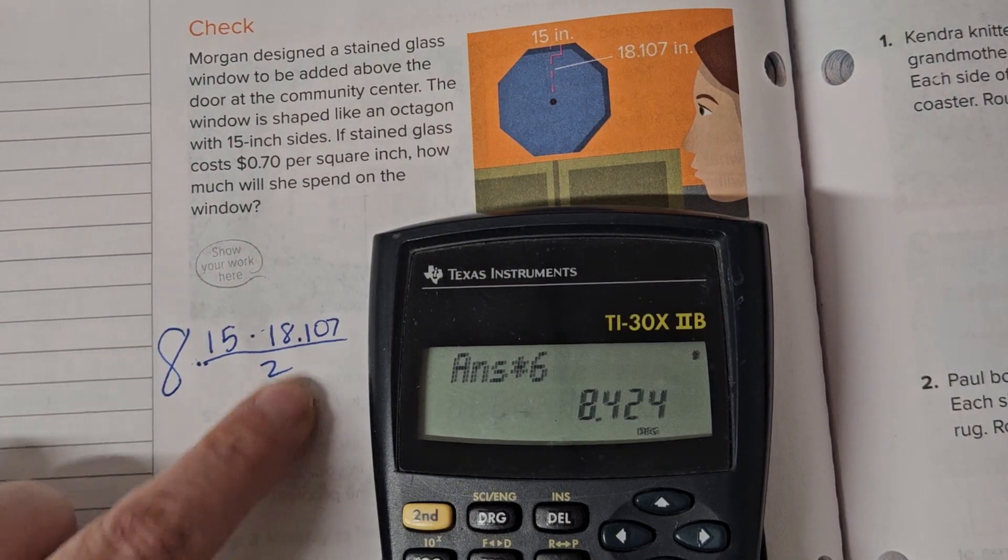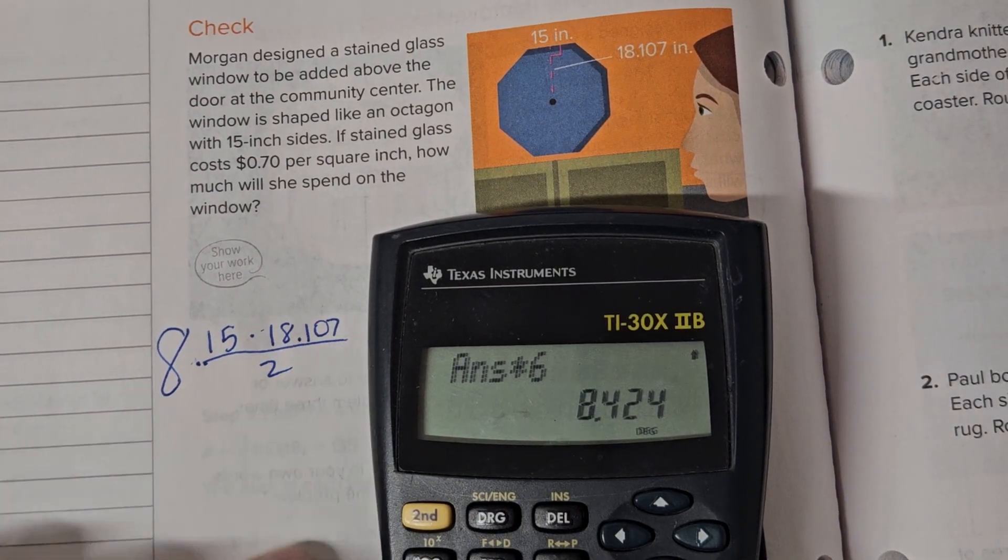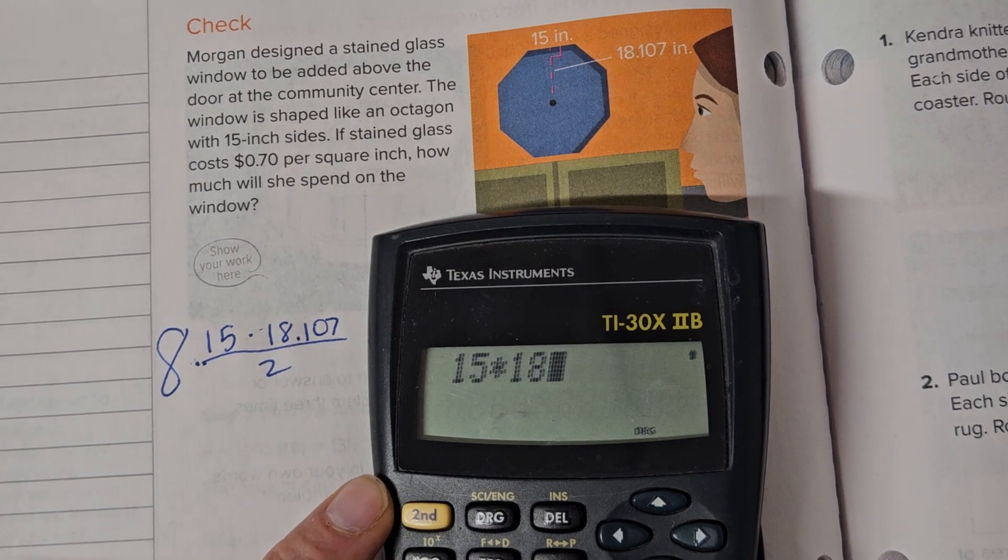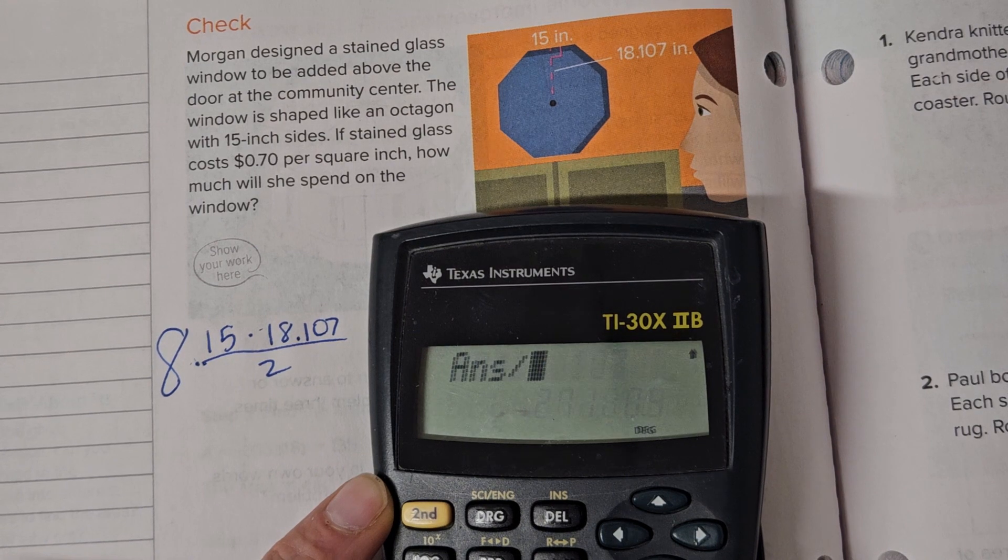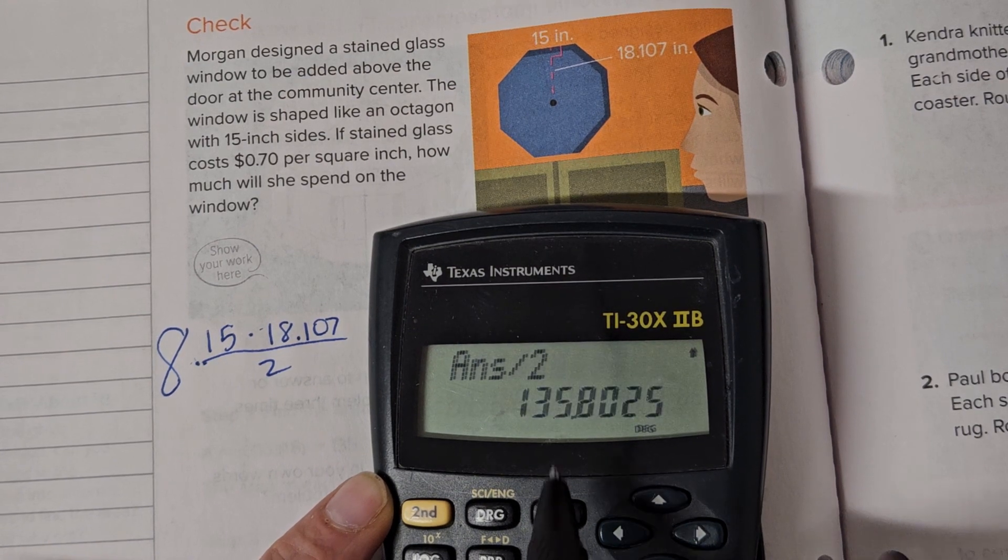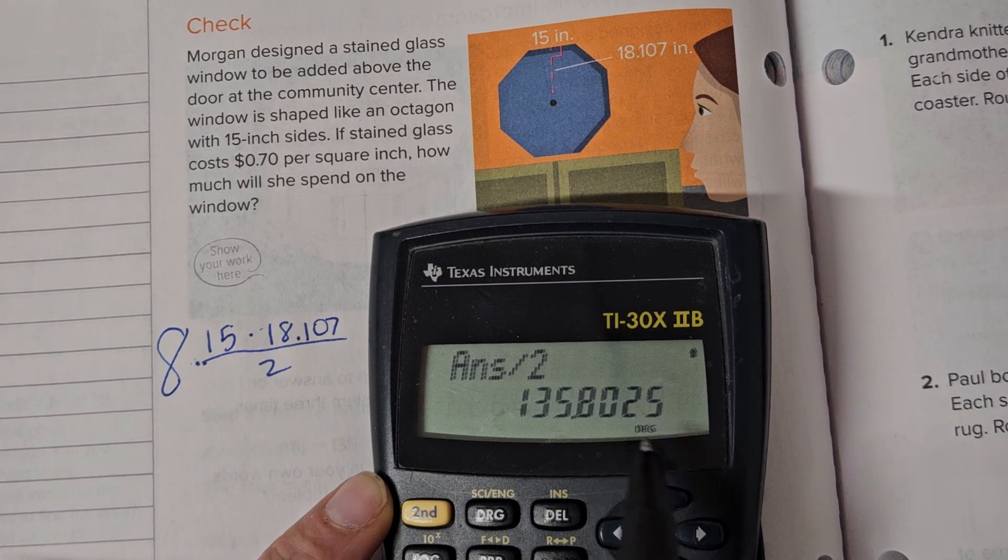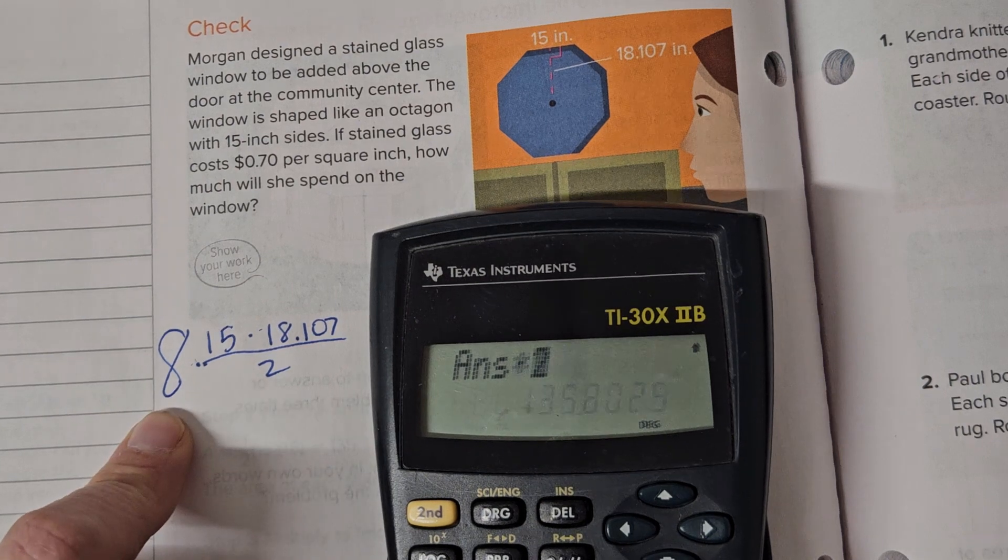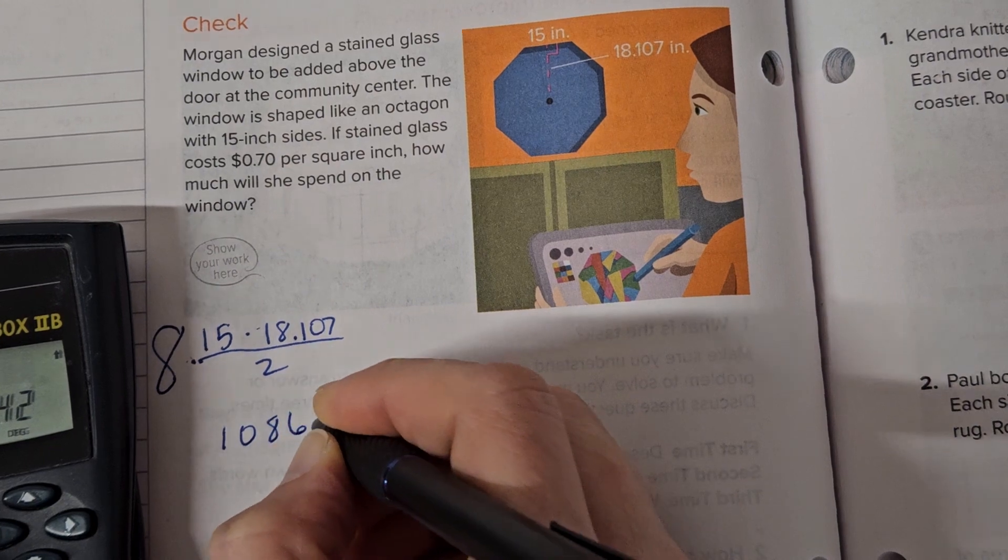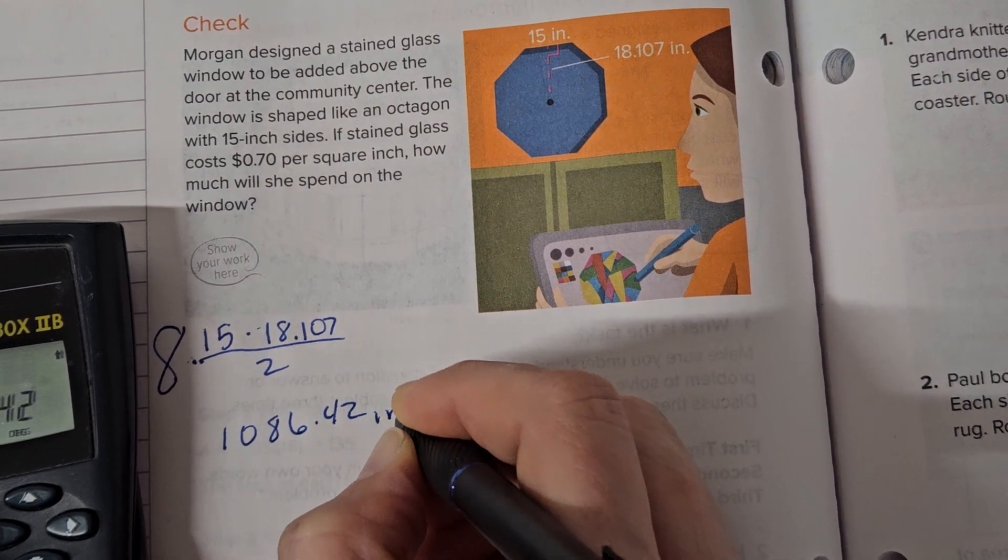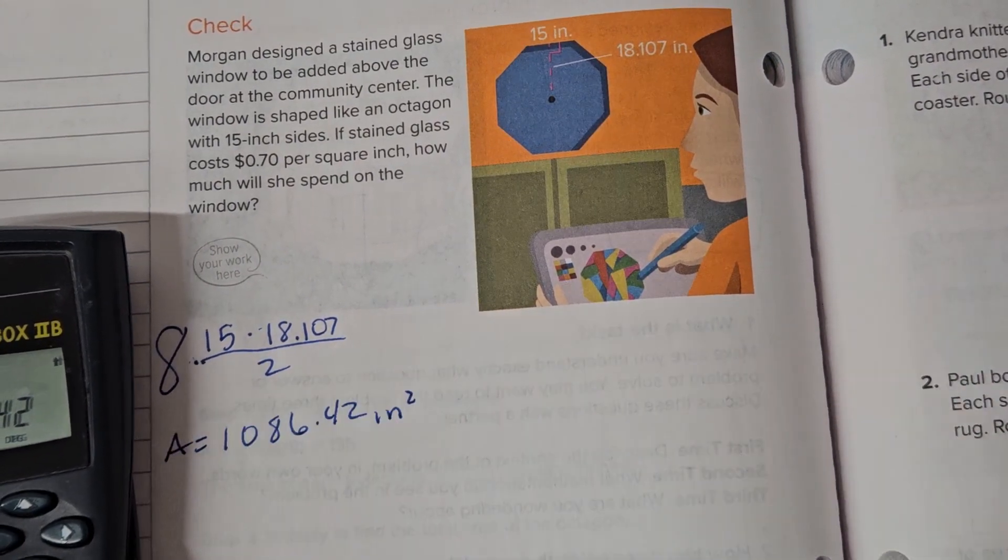Now you just follow your order of operations. Do this, because remember that's a grouping symbol. 15 times 18.107, divide 2, equals 135.8025. And then we have to times 8, because we have 8 of those. Equals 1086.42 inches squared is the area.